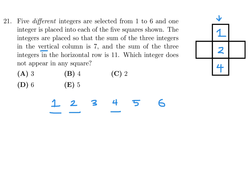That takes care of the first criteria. The next criteria is the horizontal row has to add up to 11. I've already got the 2 in the center, so I need to choose two more numbers that add up to 9, because 9 plus 2 would be 11. That would be a 3 and a 6. So the number that does not appear in the square is the 5. Number 21, the answer is E.